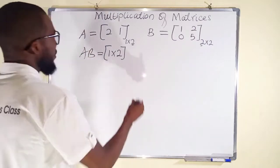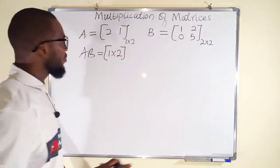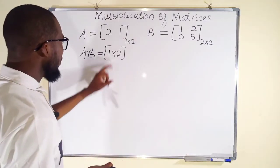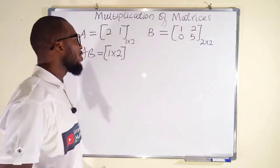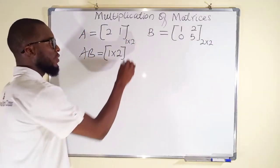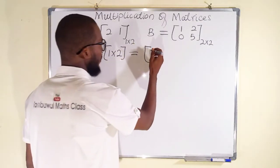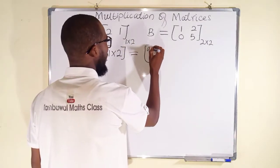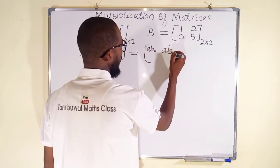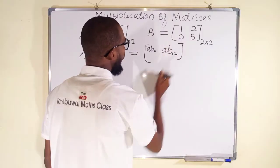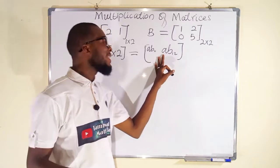Now the question is: how can we multiply these two matrices together? Since we know we are going to obtain a single row and two columns after multiplication, the result is going to be of the form AB(1,1) and AB(1,2).